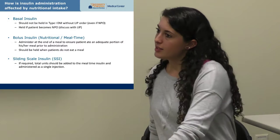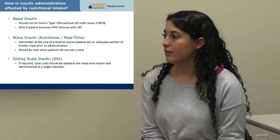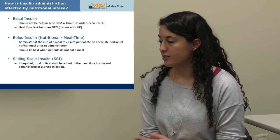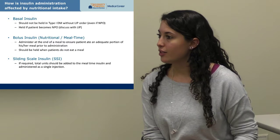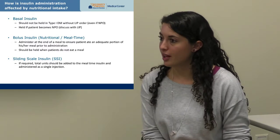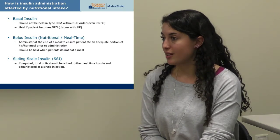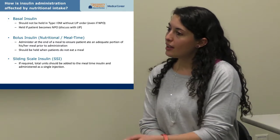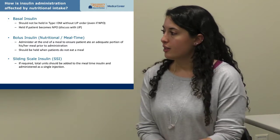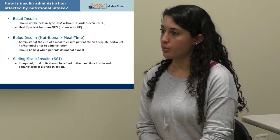Mealtime insulin in the hospital differs from home practice. At home patients typically give insulin before eating, but here we have them eat first and give it afterward. This is because hospitalized patients may eat inconsistently due to illness, vomiting, or not liking hospital food. We prefer to give it after eating to avoid causing hypoglycemia if they don't finish their meal.